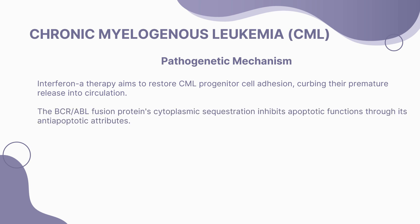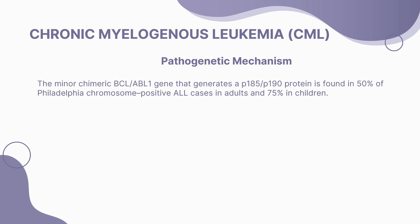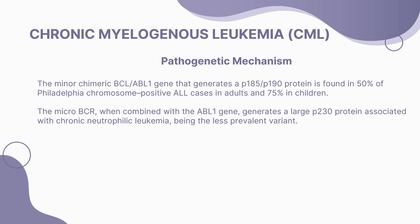The BCR-ABL fusion protein inhibits apoptosis through cytoplasmic sequestration, and the P210 protein drives CML transformation of hematopoietic stem cells. The BCR-ABL1 gene is also linked to Philadelphia chromosome positive ALL. The minor chimeric BCR-ABL1 gene generates P185-P190 proteins found in Philadelphia chromosome positive ALL cases. The micro-BCR variant combined with ABL1 generates the P230 protein associated with chronic neutrophilic leukemia.